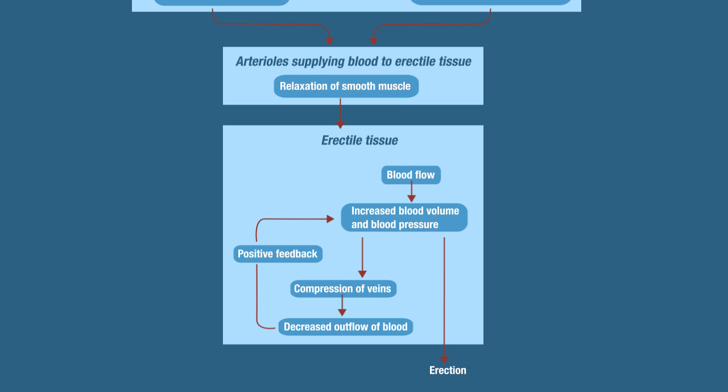The increased blood volume and blood pressure also compress the veins in the erectile tissue. If you compress the veins, will you be able to remove blood from the tissue, or will blood accumulate? The blood actually accumulates in the erectile tissue. Compression of the veins causes accumulation of blood, meaning less blood leaves the erectile tissue. This starts a positive feedback loop, and that's what causes erection.